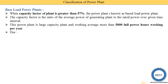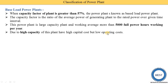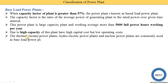The base load power plant is a high capacity plant requiring higher capital cost, meaning the initial cost is high because of its larger capacity. However, its operating costs are lower. Examples of base load power plants are thermal (steam) power plants, hydroelectric power plants, and nuclear power plants.